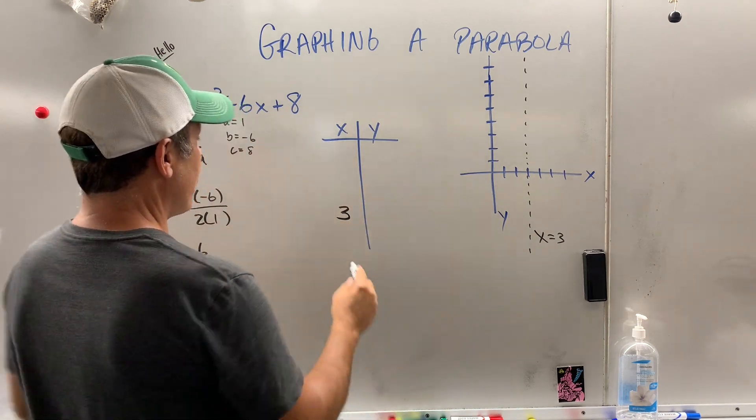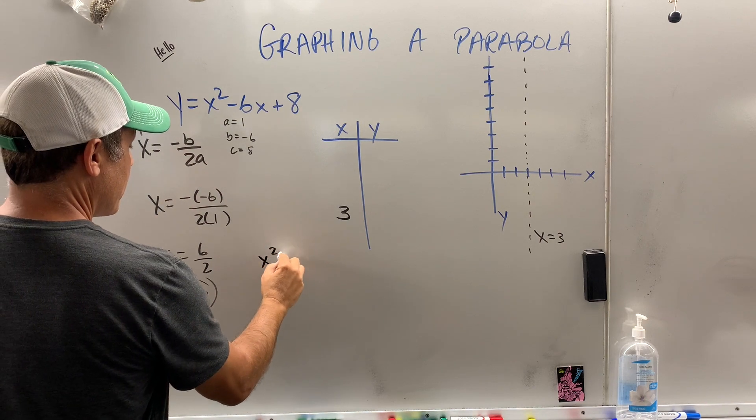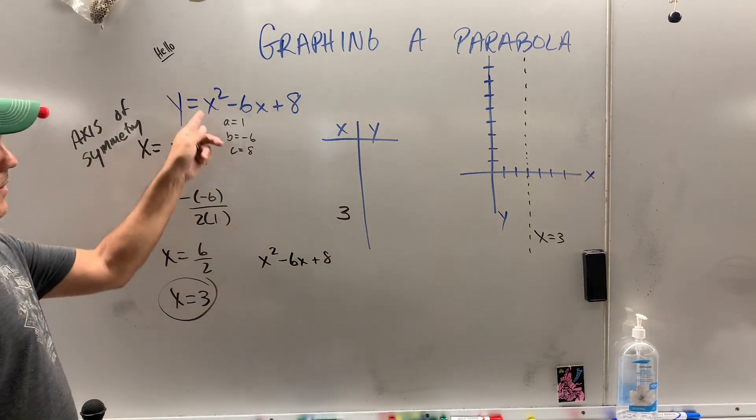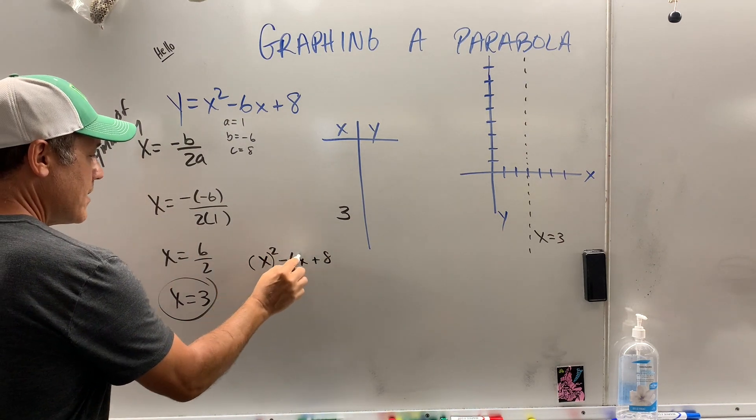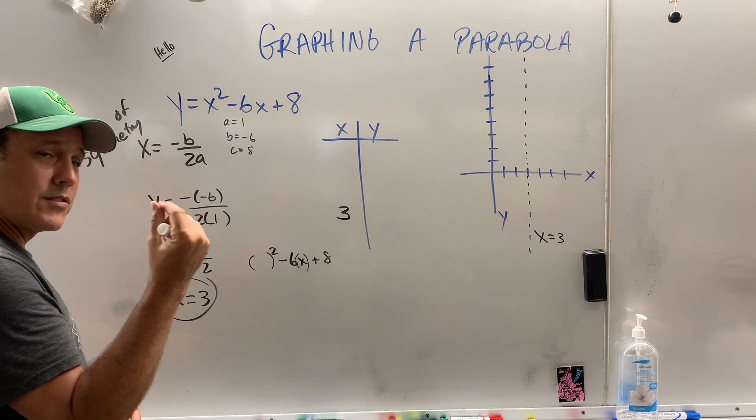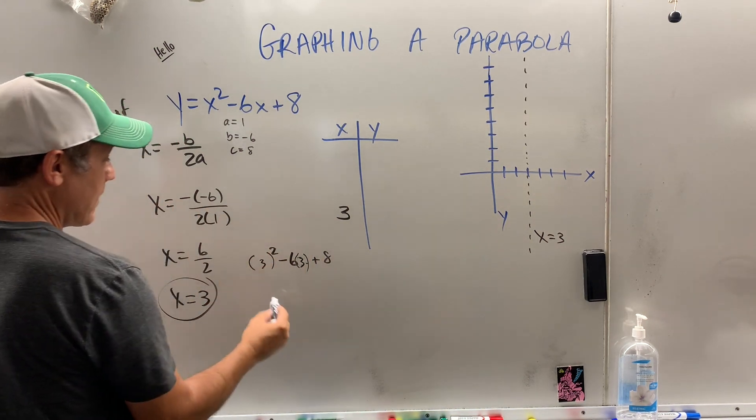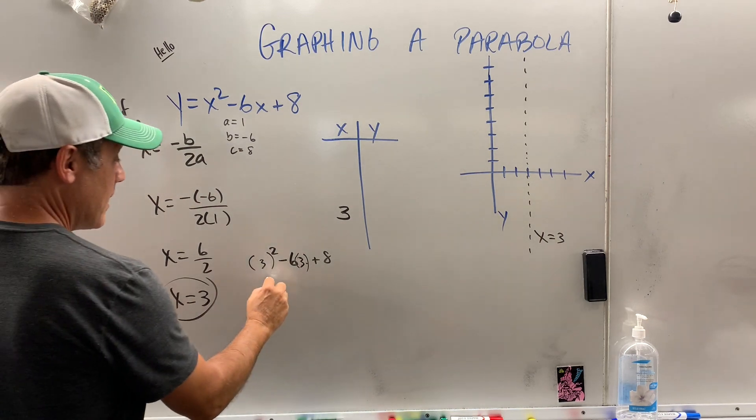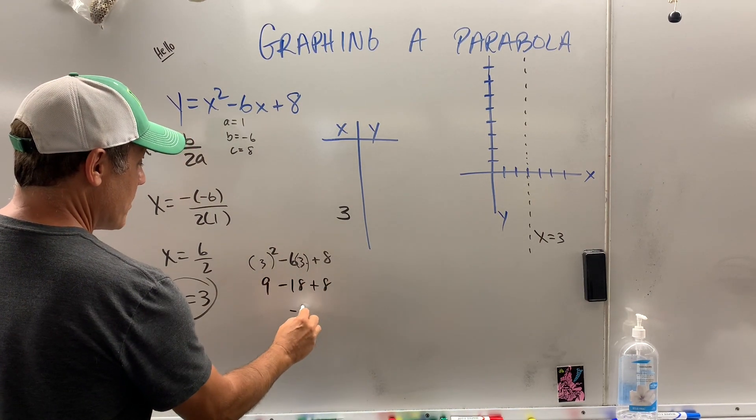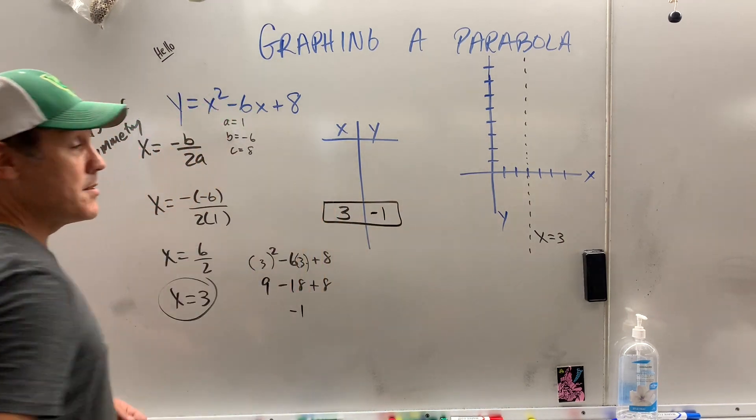So, to find the vertex, I pop 3 in for x, so I'm going to, let me teach you the best way to do it. I rewrite this, and I'm going to put parentheses around the variable. Again, I don't like doing this to get the oils on the board, but I'm going to put in 3. And you can do all this on the calculator. I don't care. That's 9 minus 18 plus 8, which is negative 1.